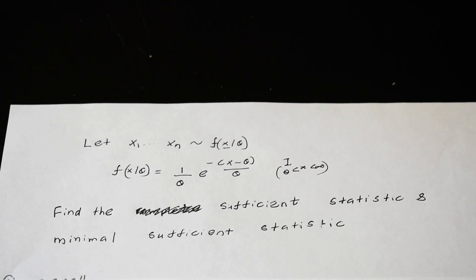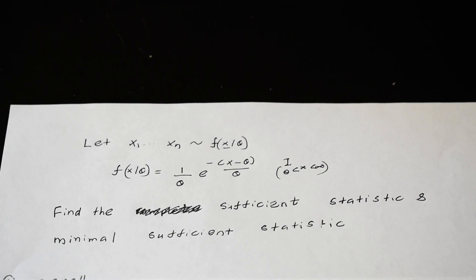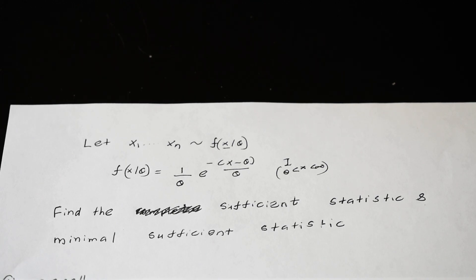Let's say we have observations with this given probability density function, which is (1/theta) times e to the power of negative (x minus theta) divided by theta, and we have this indicator function that implies all values of x are between theta and infinity. Our question asks us to find the sufficient statistic and minimum sufficient statistic for unknown parameter theta.